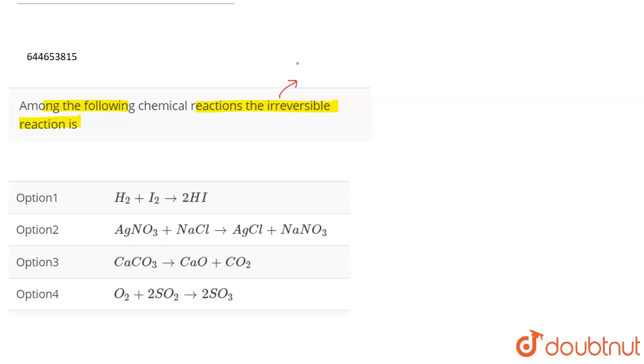So the reactions in which precipitate formation takes place are generally irreversible in nature, because once the precipitate formation has taken place, it becomes very difficult to reverse the direction of the reaction.